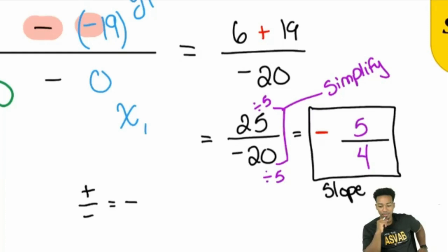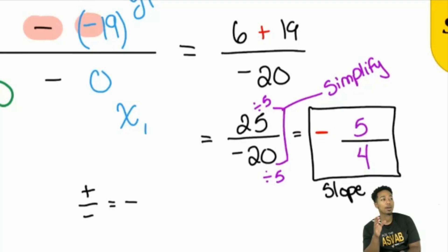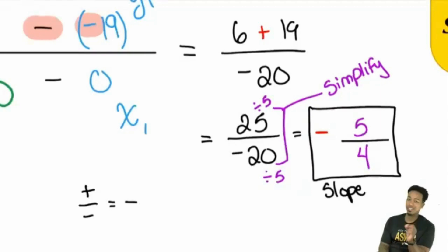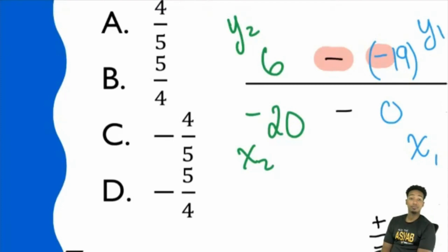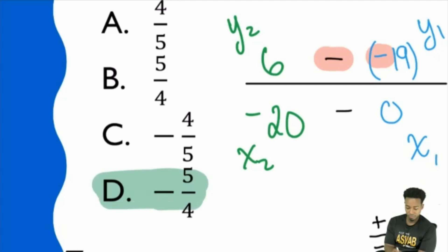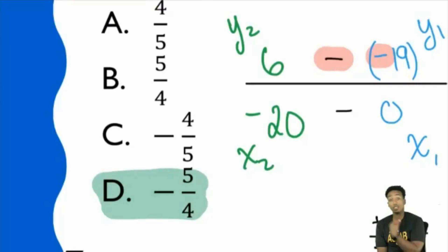Someone asks: should the answer be an improper fraction or a mixed number? My answer is always: check the answer choices. If the answers are in improper form, leave it improper. If the answer choices are mixed numbers, then convert. It depends on what the answer choices show.